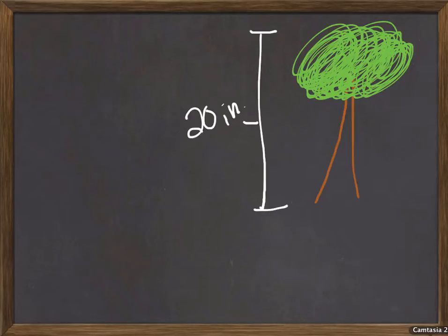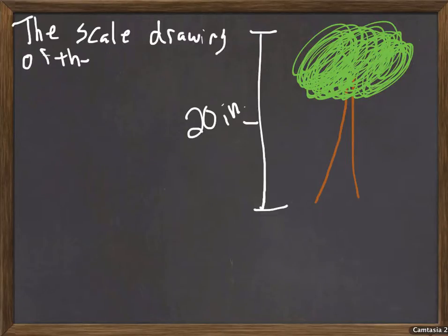Let's say the drawing on a piece of paper of a tree is 20 inches. I want to abbreviate. And the scale drawing of the tree, sorry guys I should have had this written out, is written as one to 500, some kind of ratio like that.